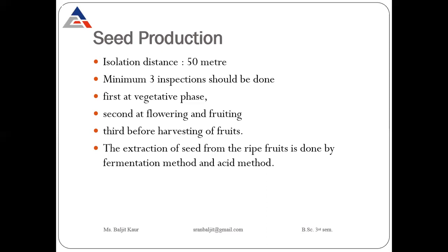So isolation distance for seed production of tomato is 50 meters. Once we grow the crop for seed production, we have to inspect the field regularly. Minimum three inspections should be done: first inspection at the time of vegetative phase, second at the time of flowering and fruiting stage, and third before harvesting of fruits.